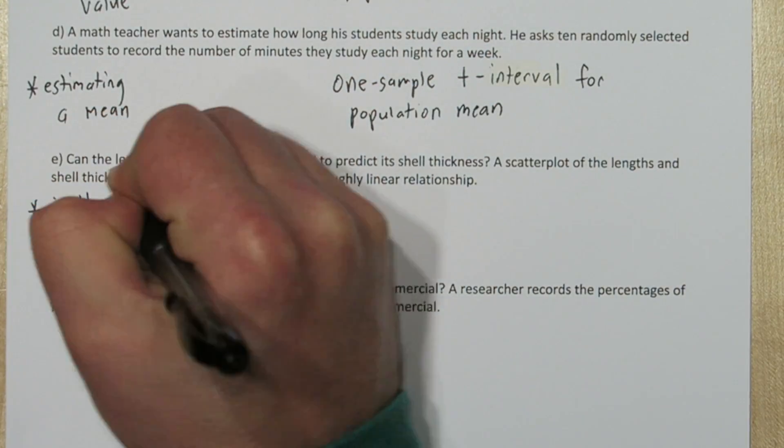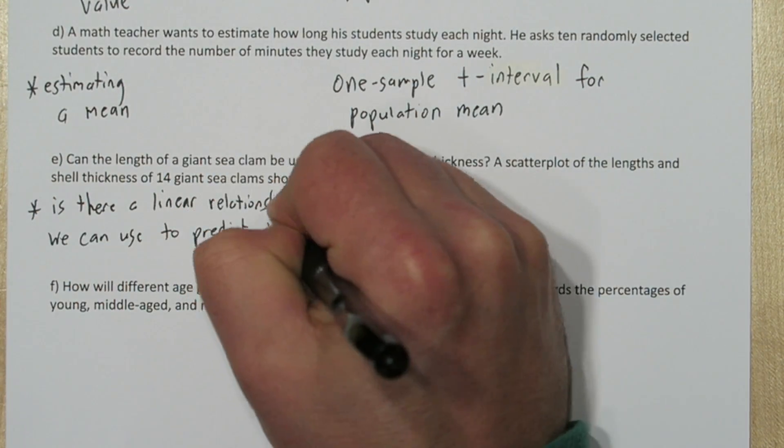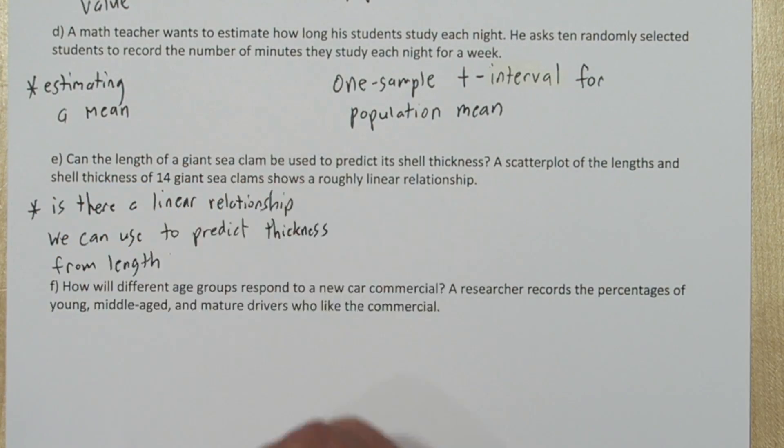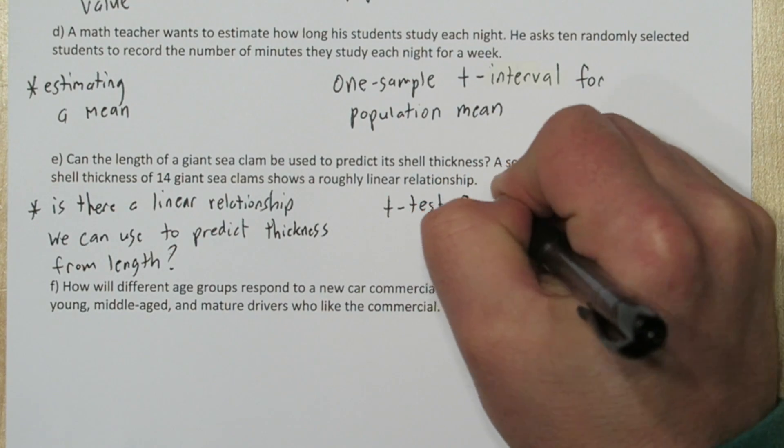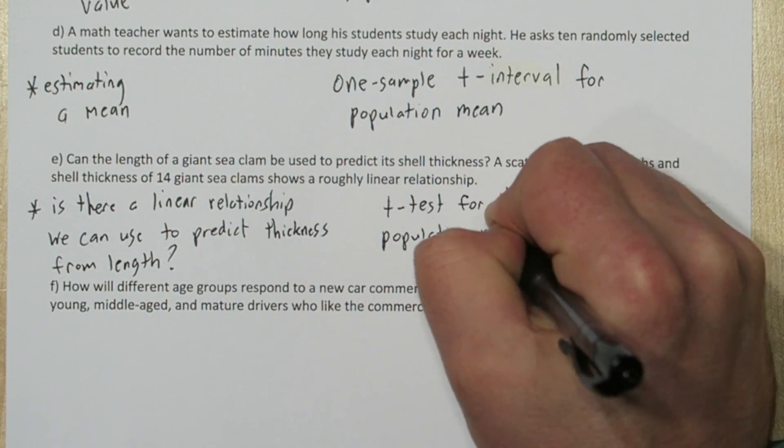In Part E, we're trying to find is there a linear relationship we can use to predict the thickness from length. That's a t-test for the slope of the population regression line.